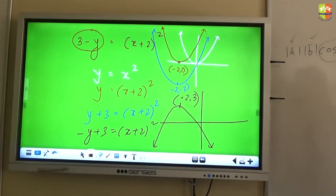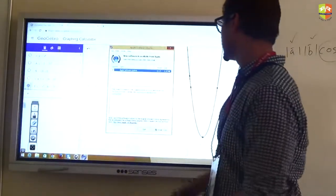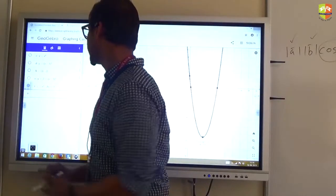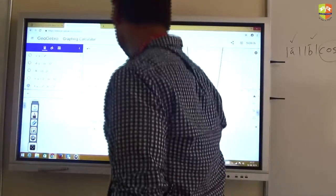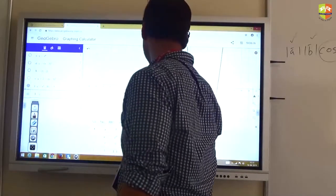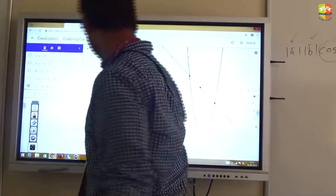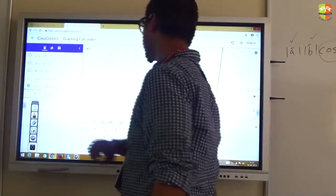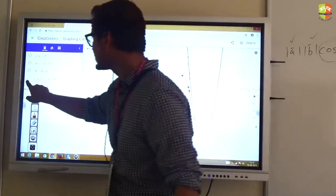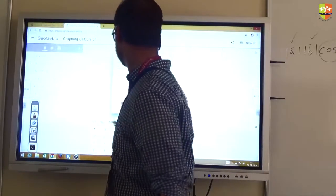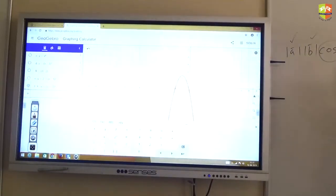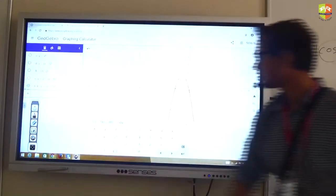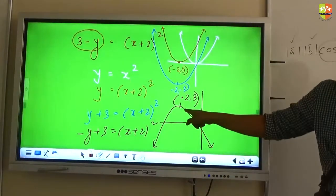Now to be more accurate it will actually look like this. This vertex position will now be at minus 2 comma 3. Can you verify this on GeoGebra? Let's verify this on GeoGebra. So the graph was 3 minus y is equal to x plus 2 the whole square. Do you see this? Does it match with whatever we did here?